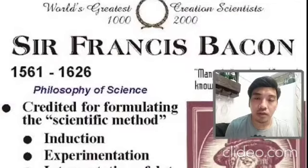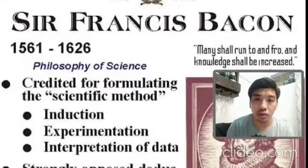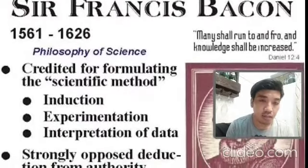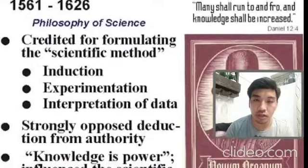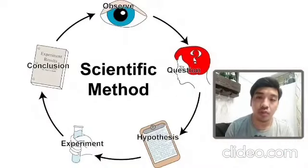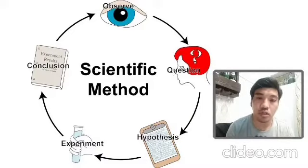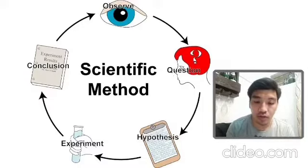Francis Bacon is another key figure of the scientific revolution who formalized Galileo Galilei's method of thinking. He mentioned that the very first thing that should be done in scientific inquiry is observation, and then the formulation of a hypothesis — a hypothesis that you are going to prove using experimental procedure. And then, just like Galileo Galilei, you would write about your findings and then conclude about them. That's the final stage of the scientific method.